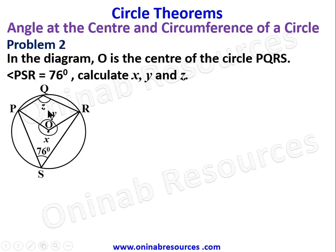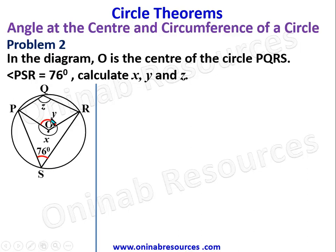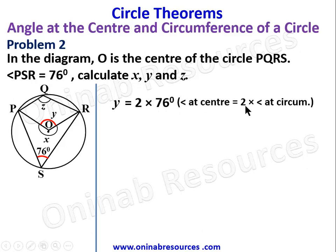Y and z are interior angles of quadrilateral PQRO, so they are not connected with respect to the angle-at-center and angle-at-circumference relationship. Y is connected to the other angle at the circumference. The angle at the circumference is connected to the angle at the center, so y equals 2 times 76 degrees — angle at center is twice angle at circumference — which gives 152 degrees.